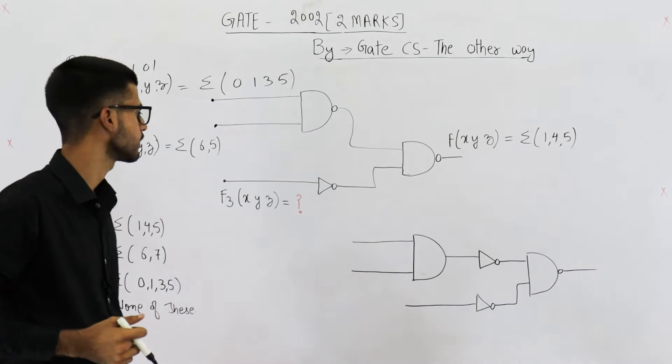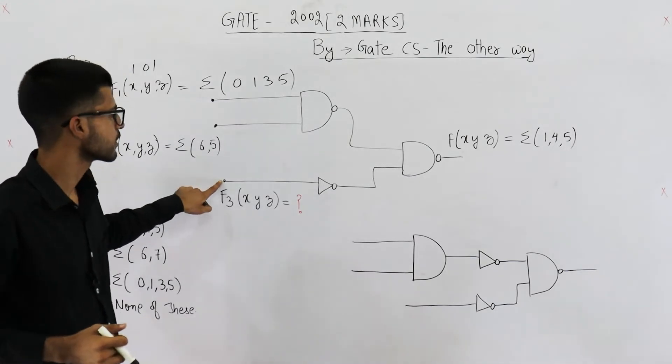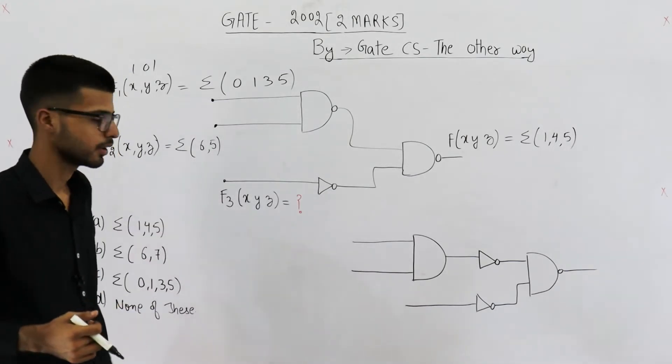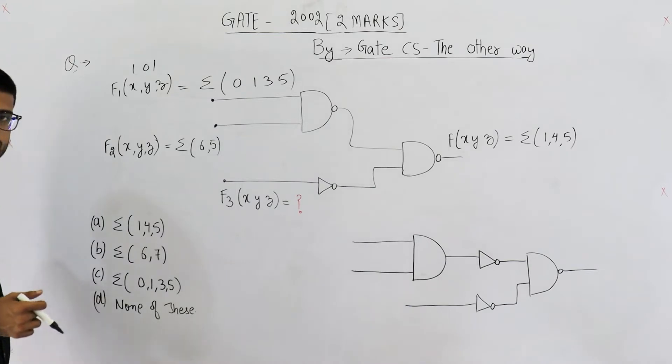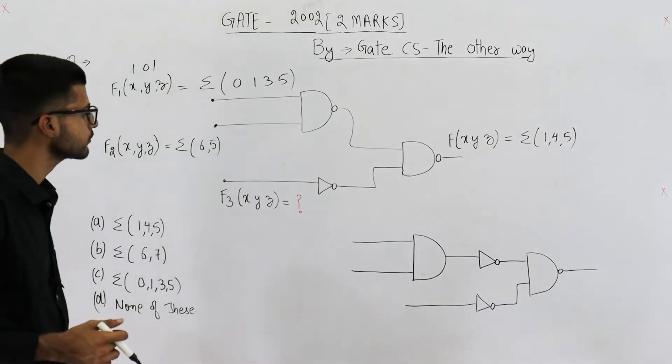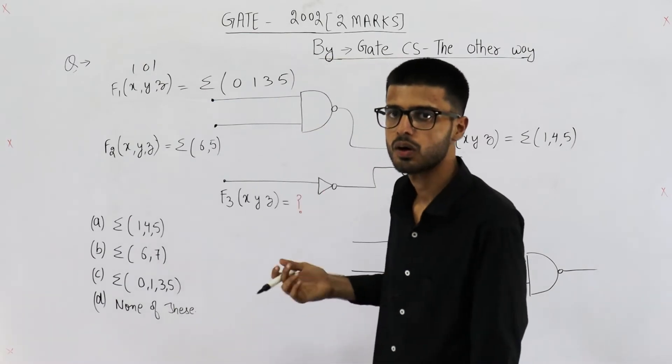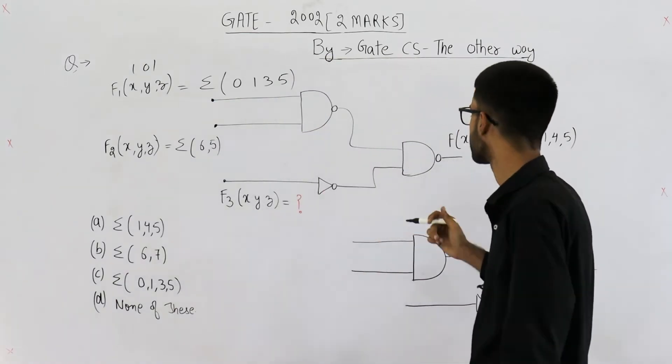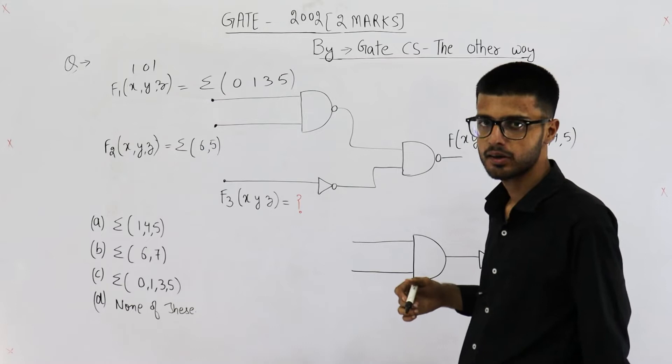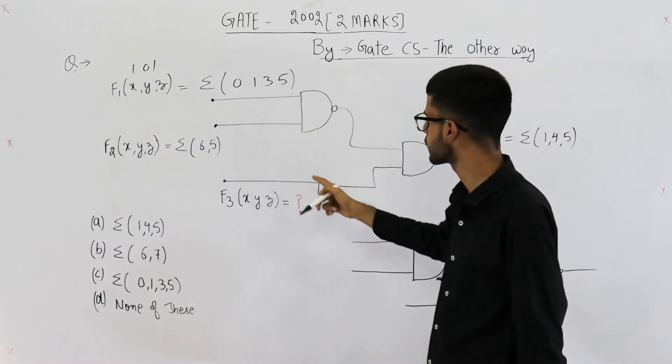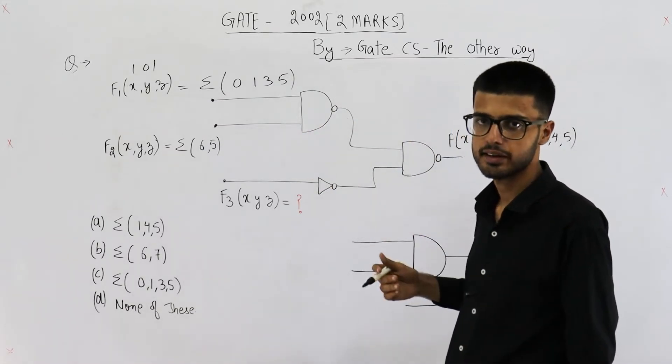The function on output of the circuit, you need to find out what is this function f3, and these are the four options given in the question. Now you know working with NAND gates or NOR gates is a bit hectic.